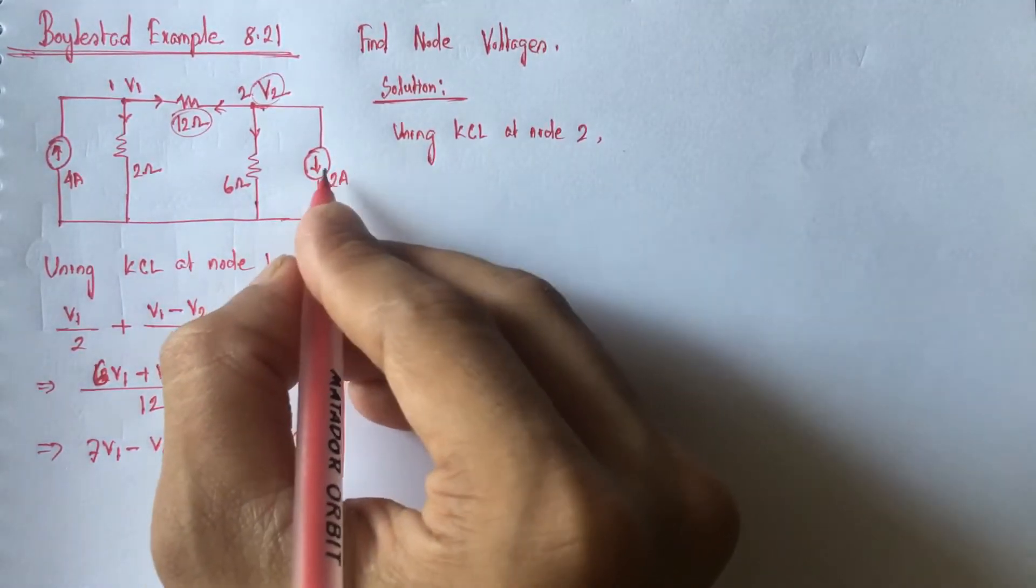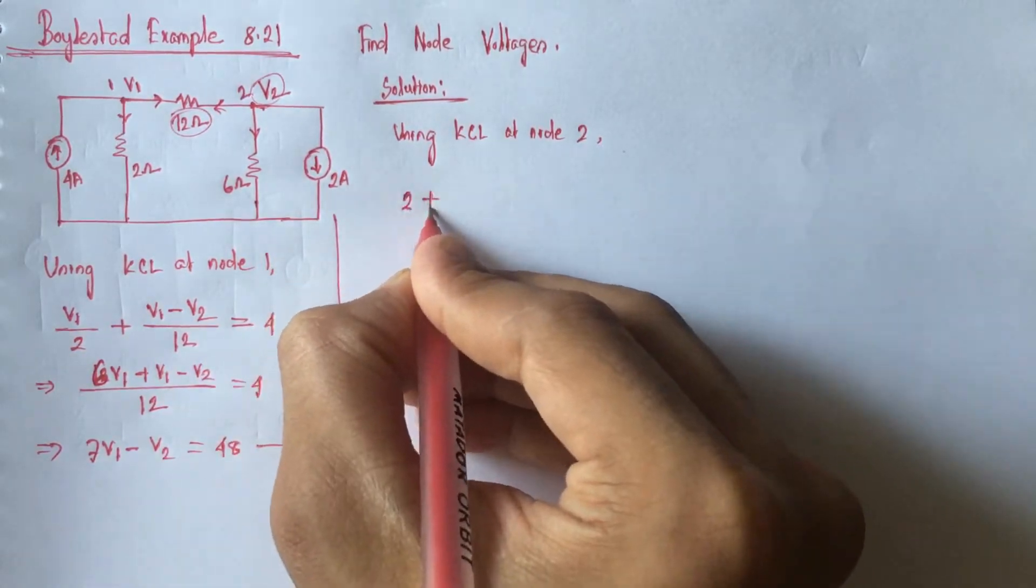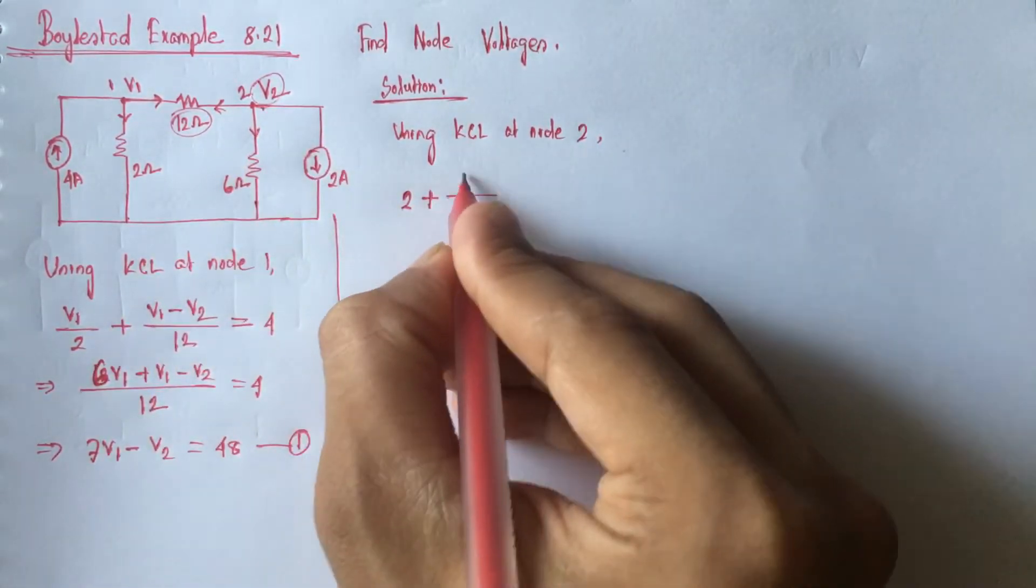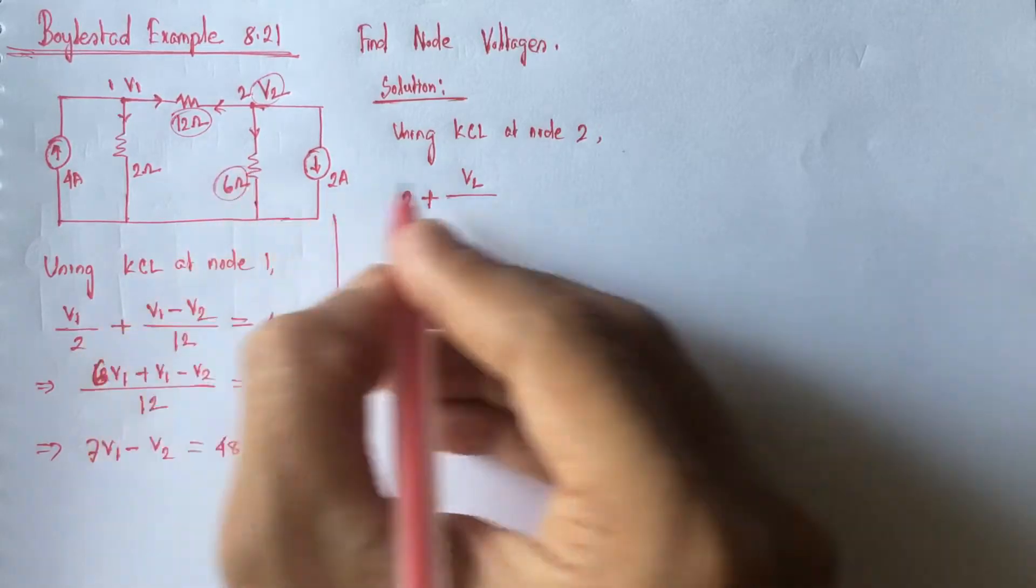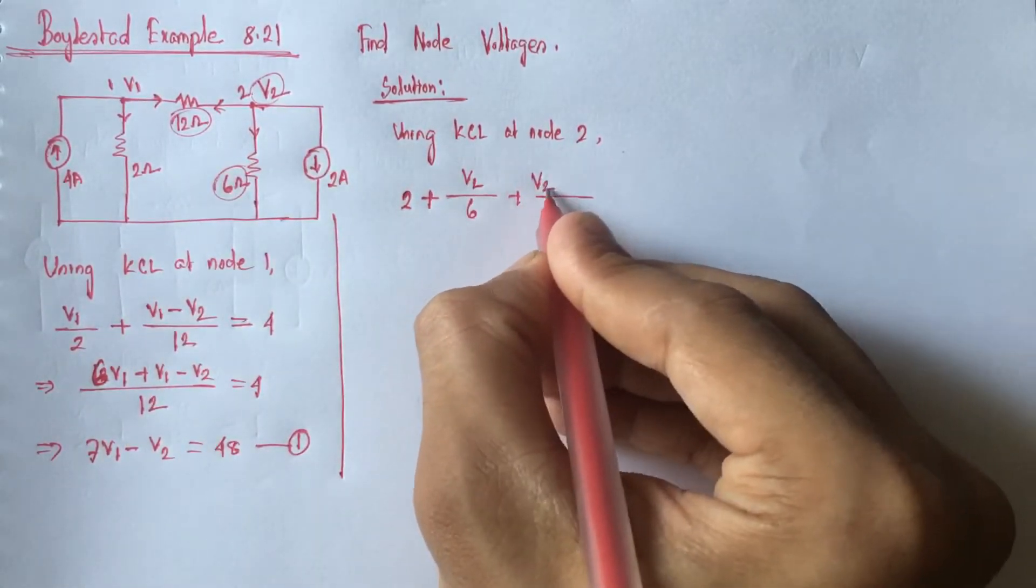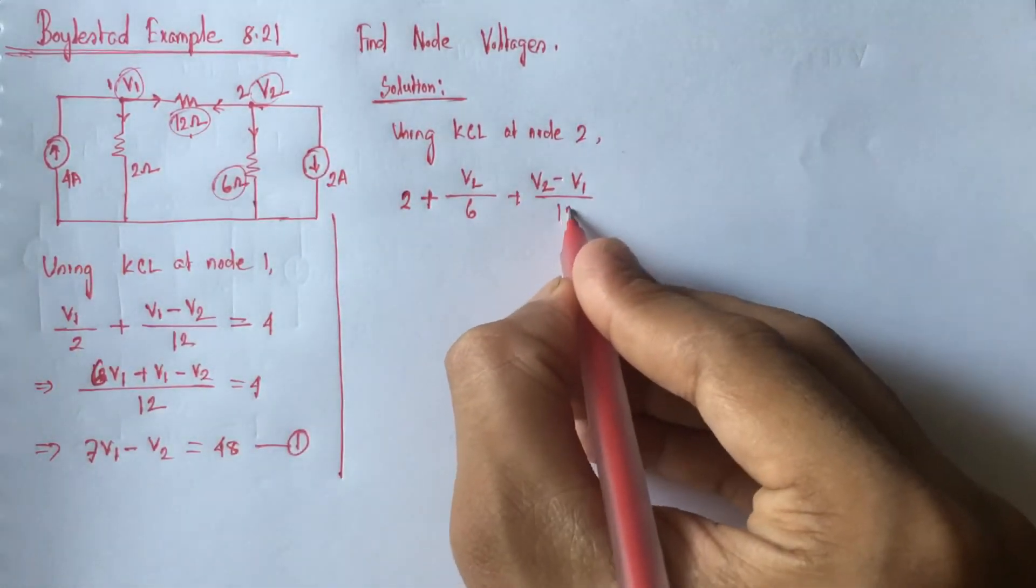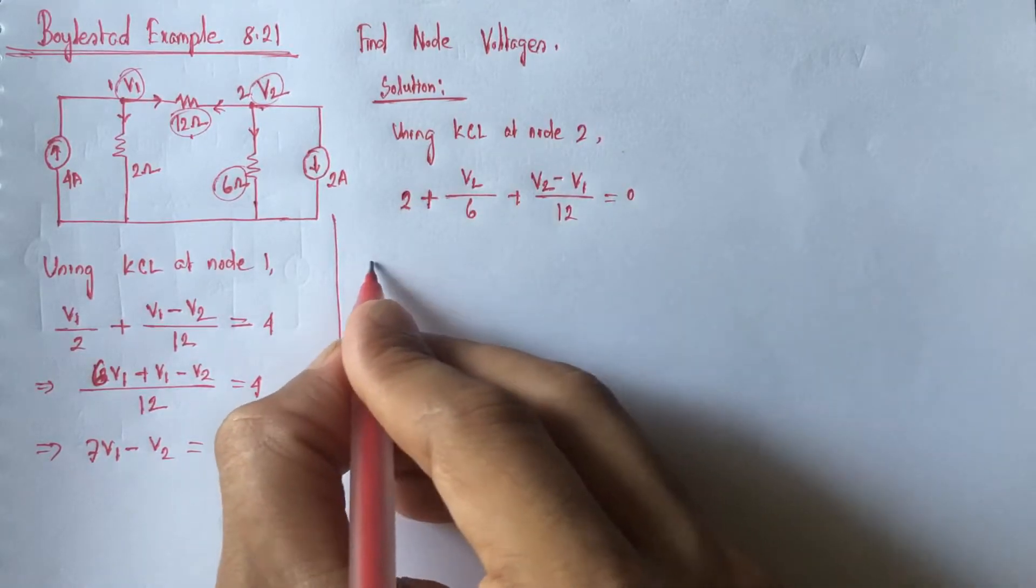we get this 2 ampere current going out: 2 plus V2 divided by 6, this current, plus V2 minus this V1 by 12 ohms equals 0.